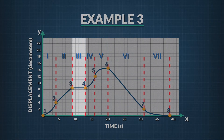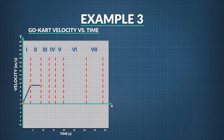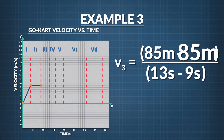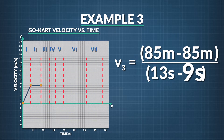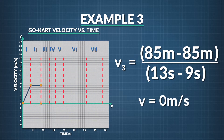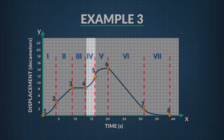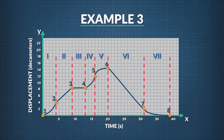Looking back at the displacement graph in region three, we see that the go-cart's displacement doesn't change. When we calculate the cart's velocity during this time, we find it equals 85 meters minus 85 meters divided by 13 seconds minus 9 seconds, which equals zero meters per second. We draw in the velocity in region three as a flat line at zero meters per second. In region four, the slope of the curve is positive and increasing, which means the velocity is also positive and increasing there.